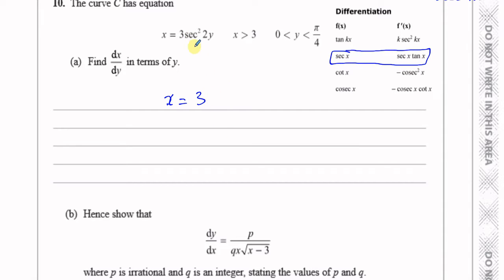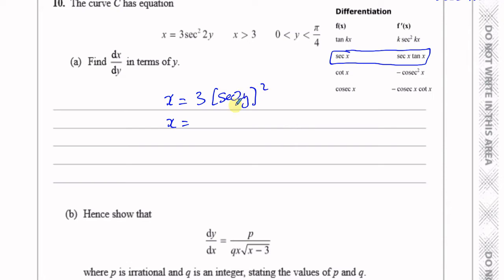So I'm going to rewrite this because this is sec squared 2y — to make it in that form, I'll put it as sec(2y) all squared. That makes it a bit easier to think of: this is the secant of 2y, all squared. Now what we can do here is use the chain rule, because this is like something inside a bracket — something squared.